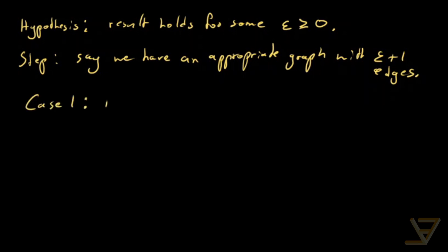Case 1 is that it is a tree. And a tree is equivalent to saying there are no cycles. By cycle, I mean that something like this, where you end up where you started.